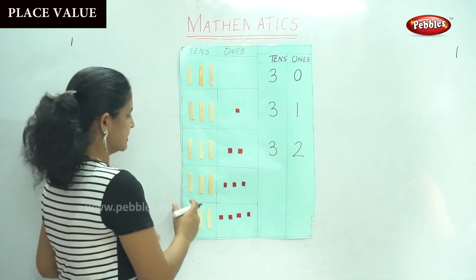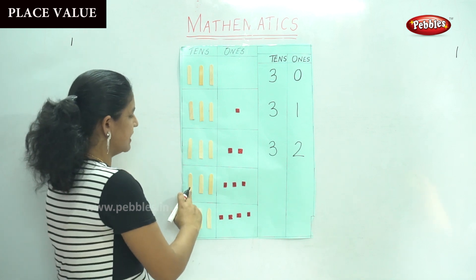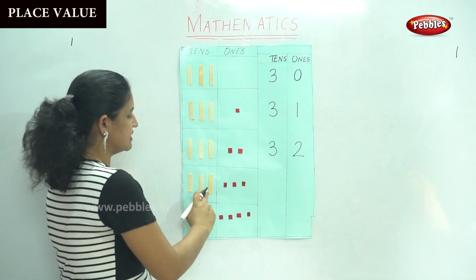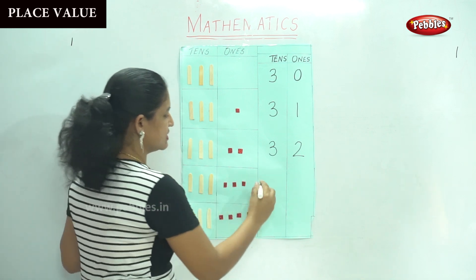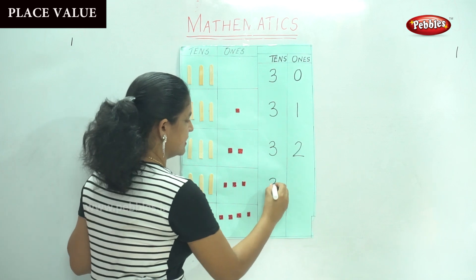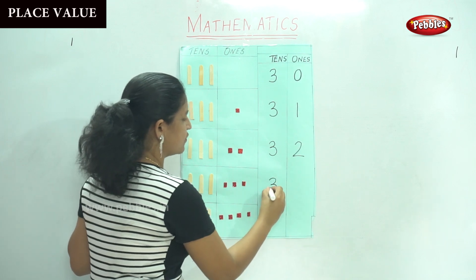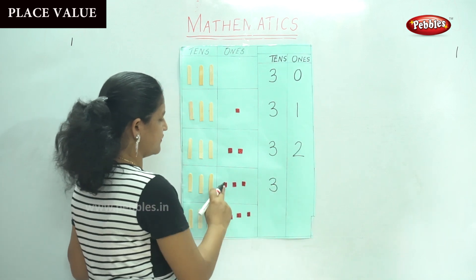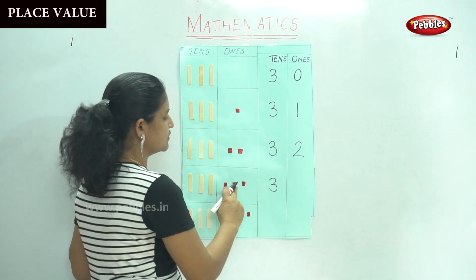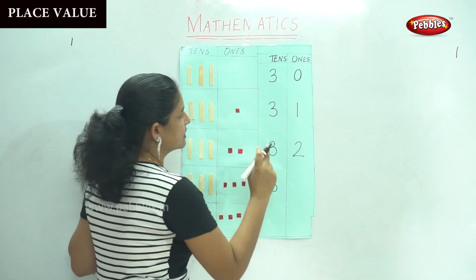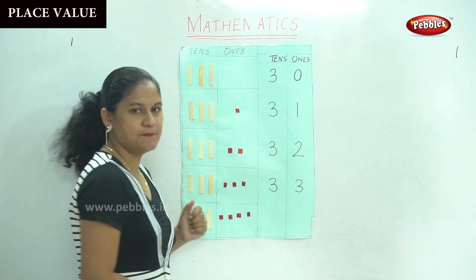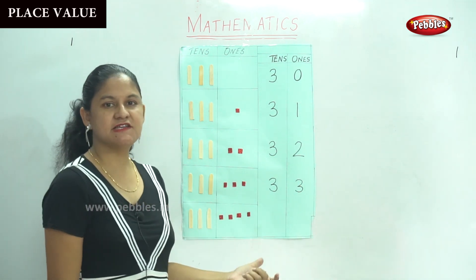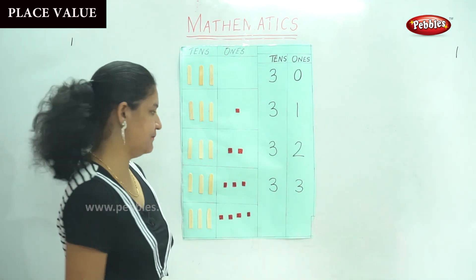The next is ten, twenty, thirty. We have three tens, and in the ones house we have one, two, three — three ones, which gives us the number thirty-three.